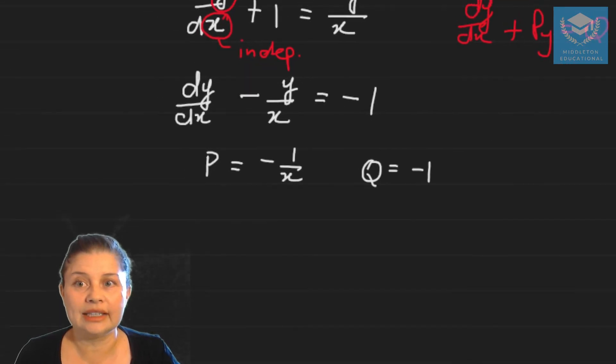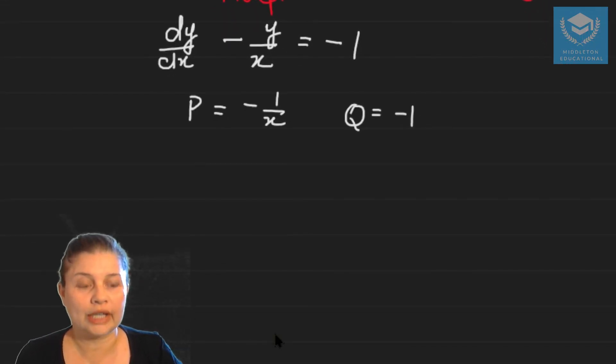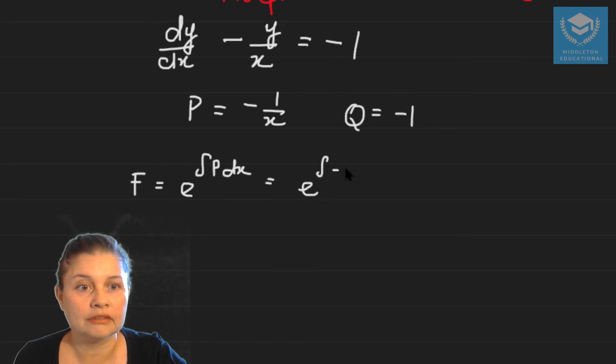Once we have done that we now need to find the expression for our integrating factor. So our integrating factor is defined as e to the power the integral of p dx and that is going to be the integral of minus one over x dx which is e to the minus ln x.